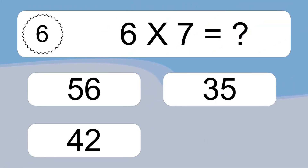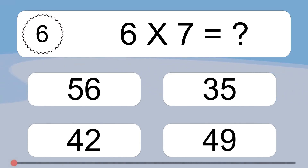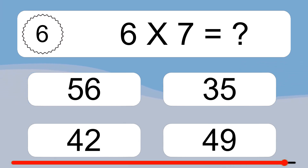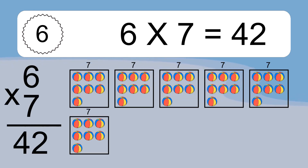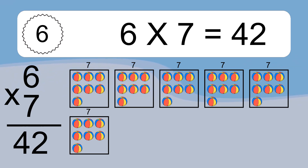Six times seven equals 42. We have six boxes and each box has seven colorful balls inside. If you count all the balls in all the boxes together, you will have six times seven balls. This equals 42 balls.